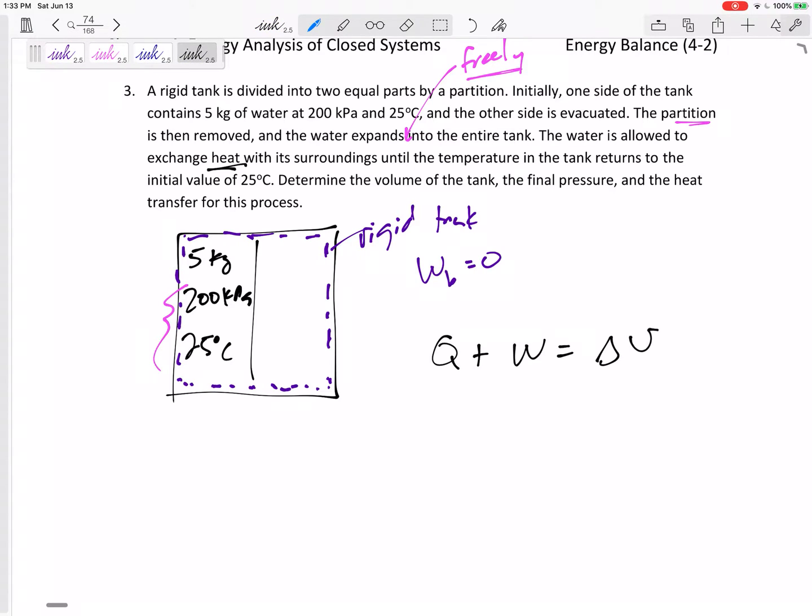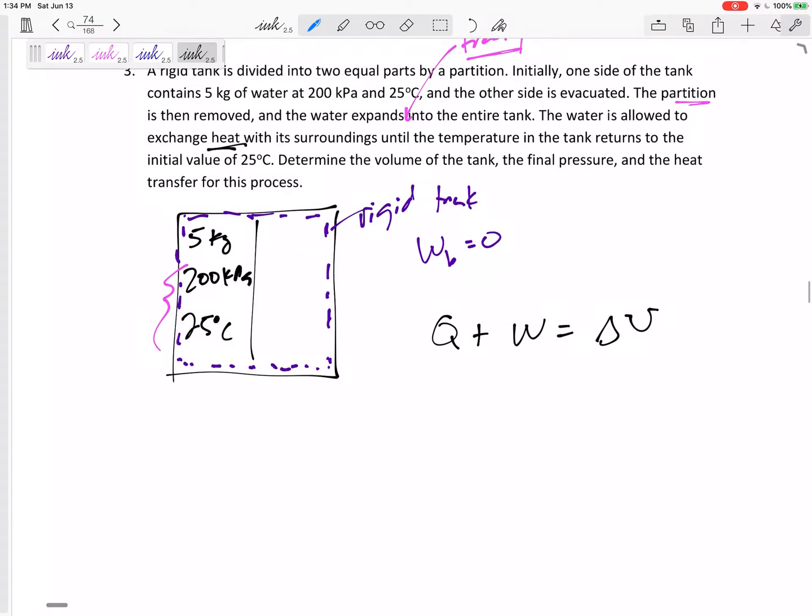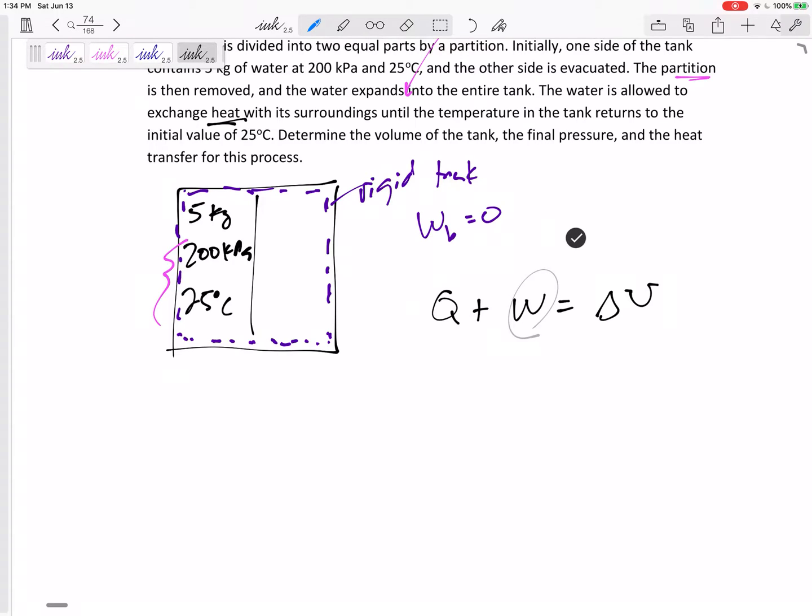So for this, any Q plus W, I'm going to have delta U on the right hand side of my equation. Because it's a rigid tank, I kind of thought there might be boundary work, but it's not like it's pushing this partition out of the way. The partition was taken away. And so it's freely allowed to expand. So this W right here would be any other work. Is there any other work? Is there any shaft work, any paddle wheel? I don't see any other work right in here. So it's really all the heat transfer that exchanges from the surroundings to the system equals delta U. And what is delta U? M U2 minus U1. M U2 minus U1.